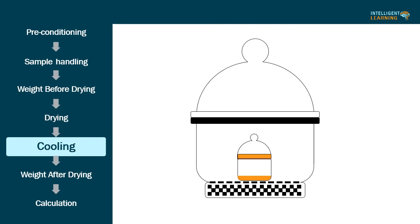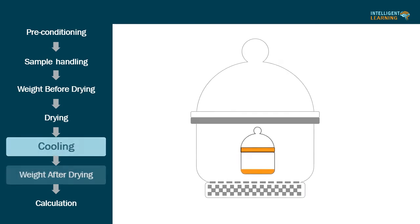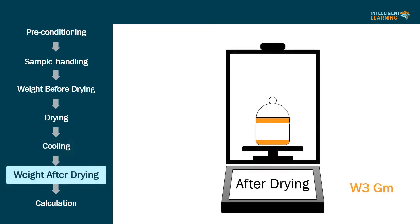Fifth step: cooling. Upon opening the chamber, reapply the same stopper to the bottle and allow it to come to room temperature in a desiccator. Sixth step: weight after drying. Weigh the loaded bottle.